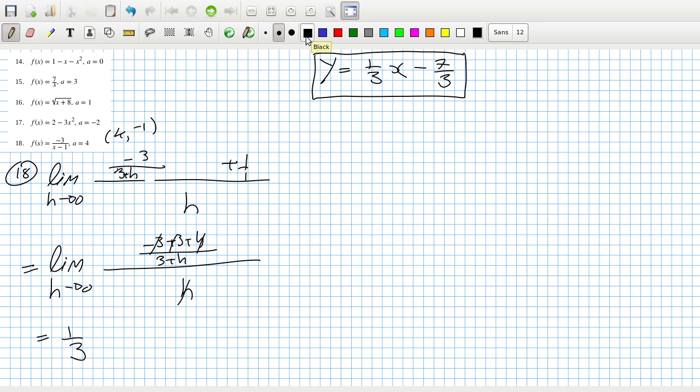Yes, and then, put in 4, 3 over 3, minus 1. And then, 1 over 3 times 4 minus 7 over 3. Yeah, that looks right. 18 looks right.